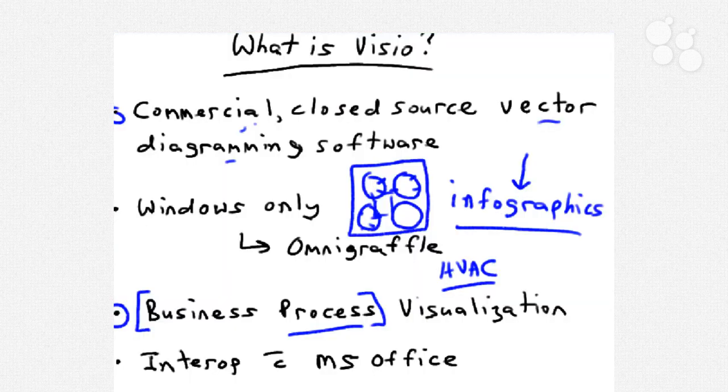And because they're vectors, they're going to be crystal clear. You're not going to lose any resolution at all. So now I hope you understand what we mean when we say that Visio 2010 is vector diagramming software.